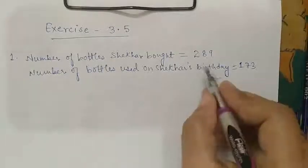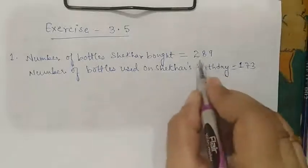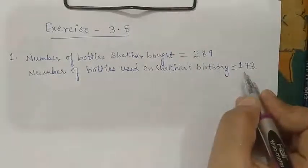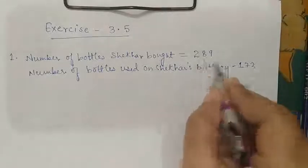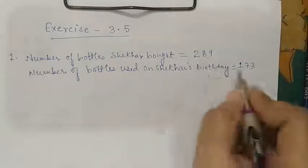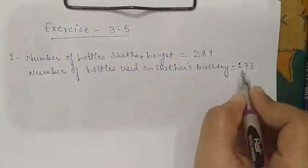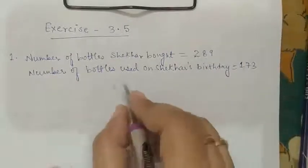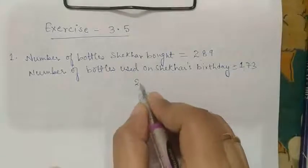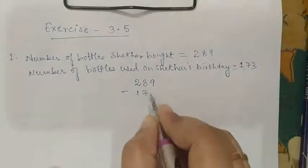On his sister's birthday, we can figure out that it is the remaining bottles which were used. Therefore, for finding out the number of bottles, we need to subtract these two. We will subtract. So here we will do 289 minus 173.